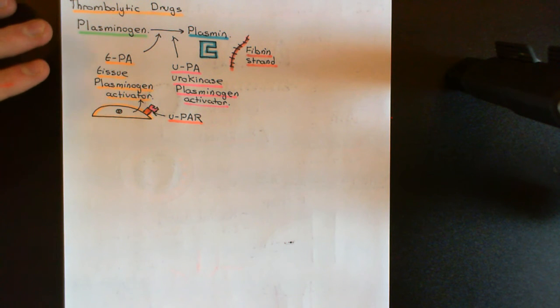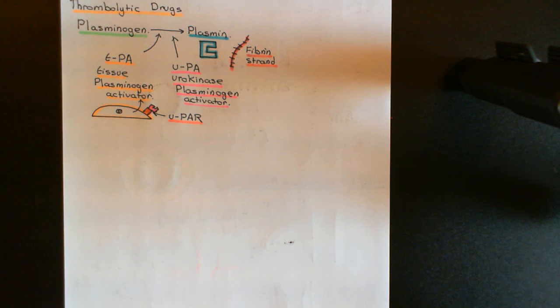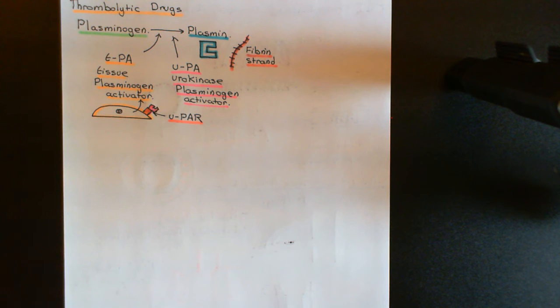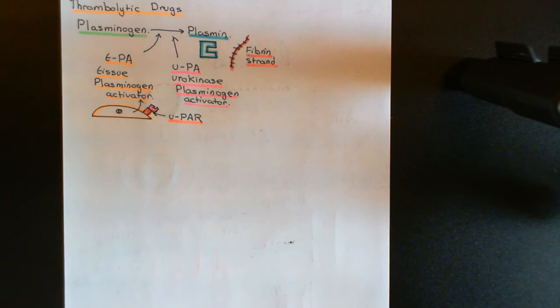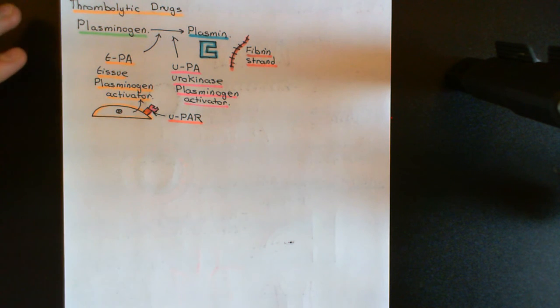These are the endogenous mechanisms for lysing a blood clot, and this is why after about 12 hours of suffering an acute coronary syndrome the clot will start to lyse on itself as these mechanisms come into play. However, what we can do to increase the speed with which this happens is give drugs that activate this process — and these are the thrombolytic drugs.